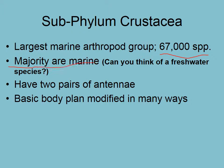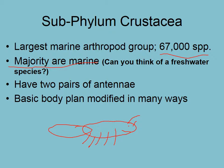Most of them are marine, though you might be able to think of a freshwater one. They have two pairs of antennae and modify the basic body plan in many ways. Here is our cephalothorax — one pair of antennae, two pairs of antennae, lots of different appendages, and an abdomen. There's your basic body plan.